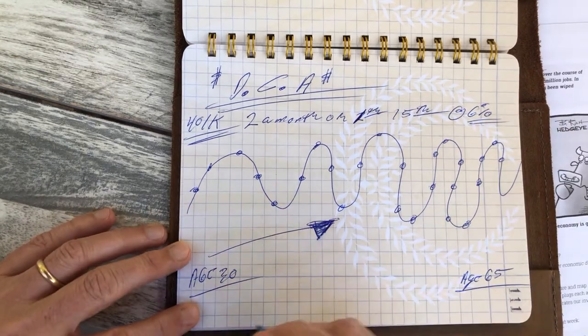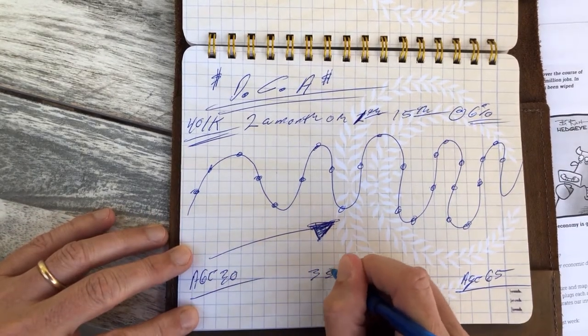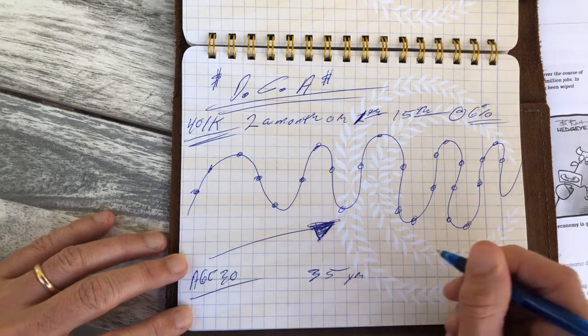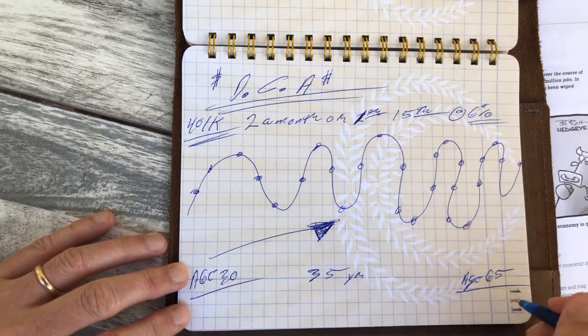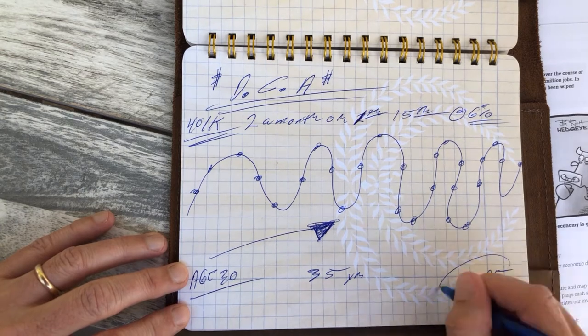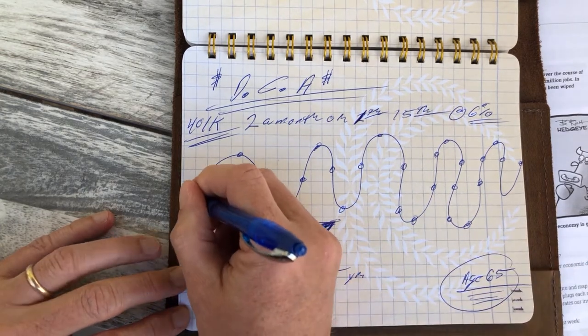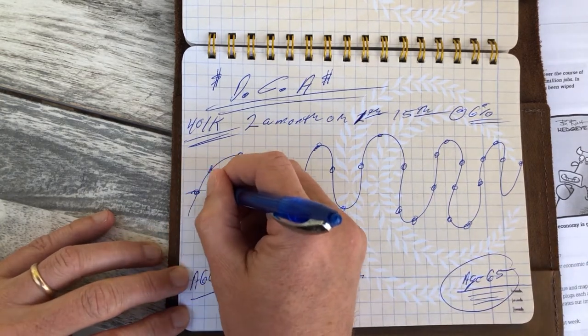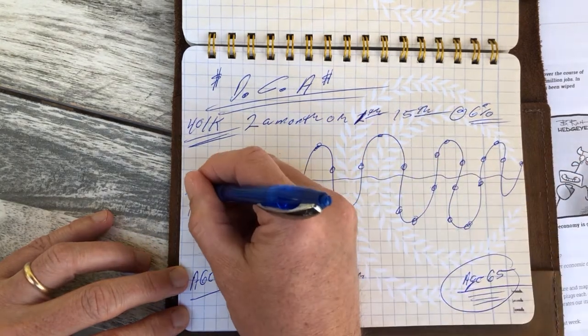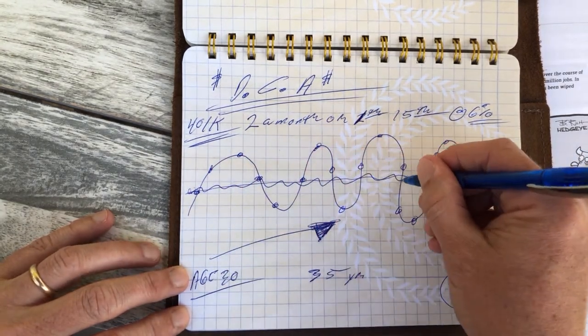So in this case, what is that, 35 years? Okay, 35 years you're investing, you get to retirement here at 65, and your average is this. Okay, this is your average price.